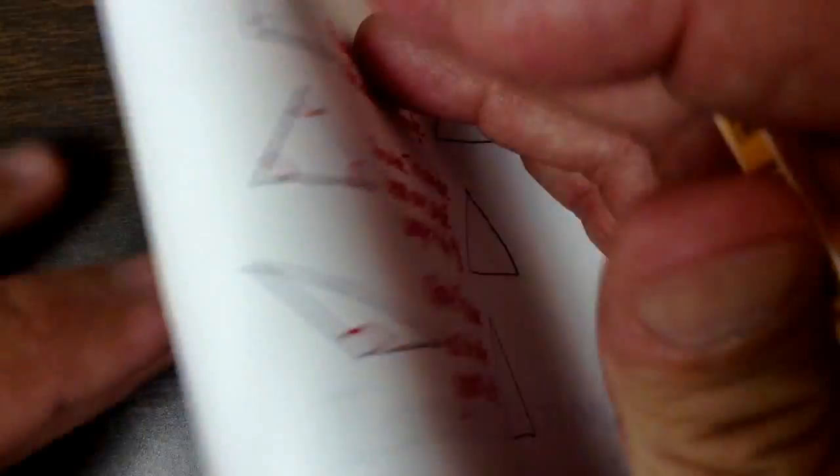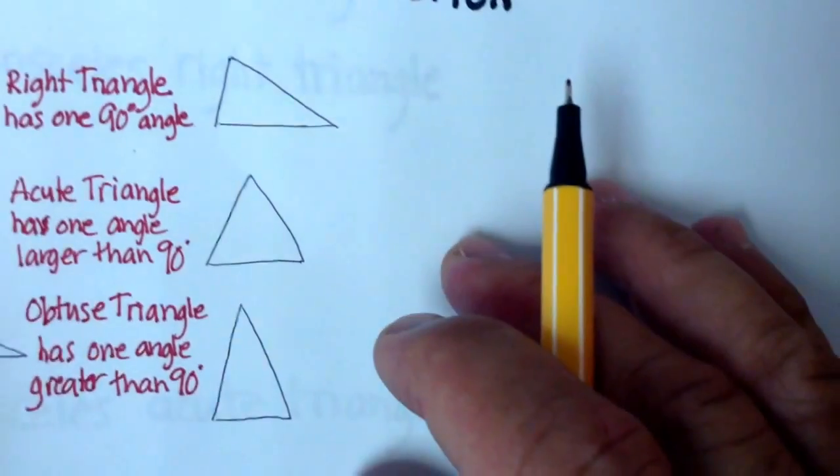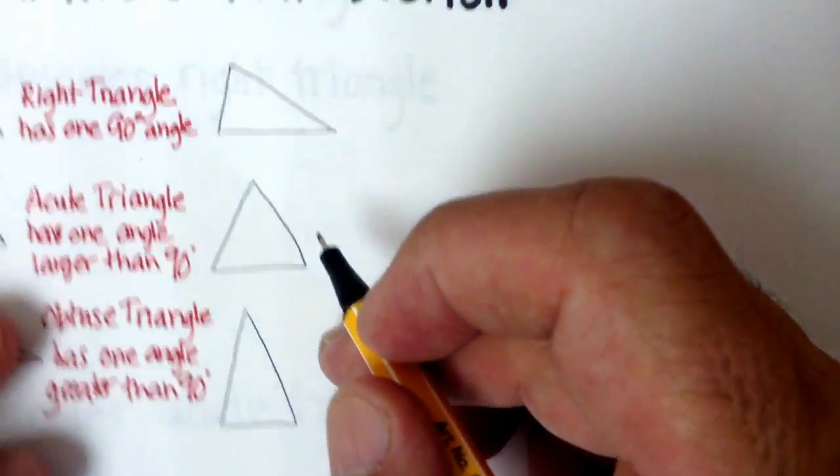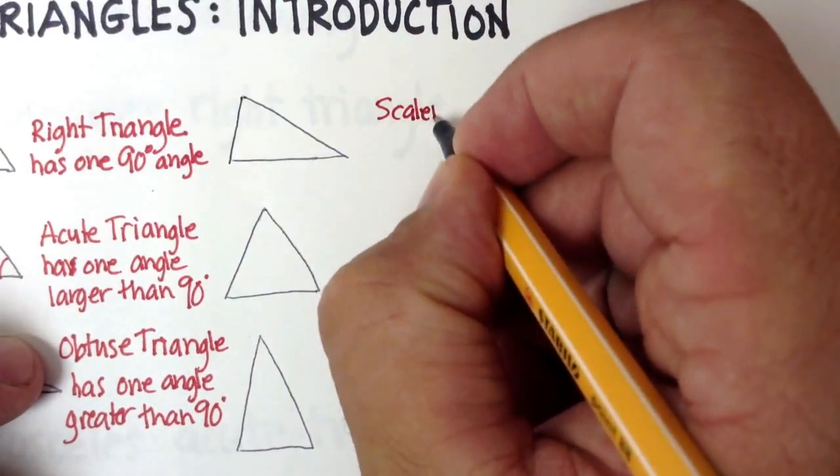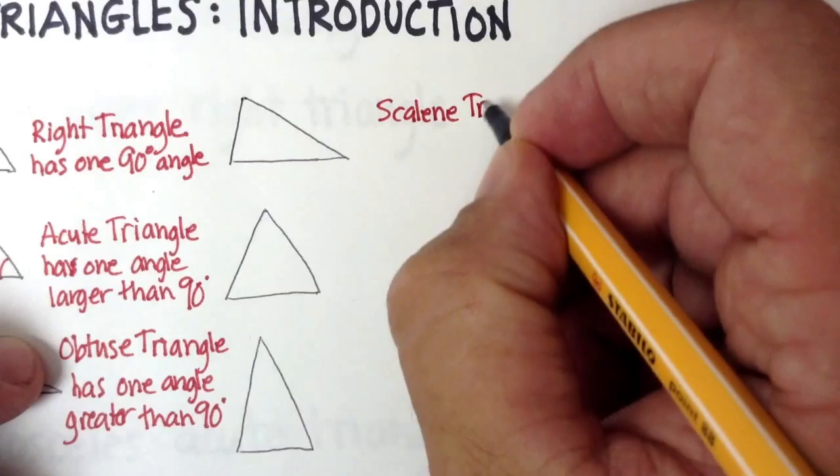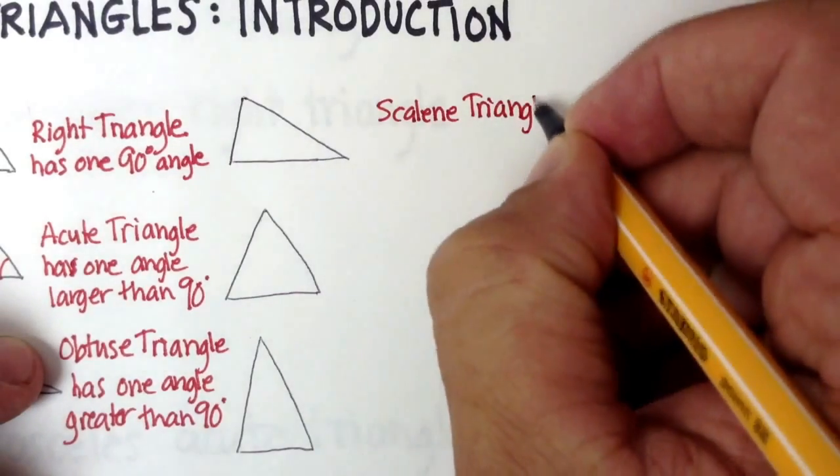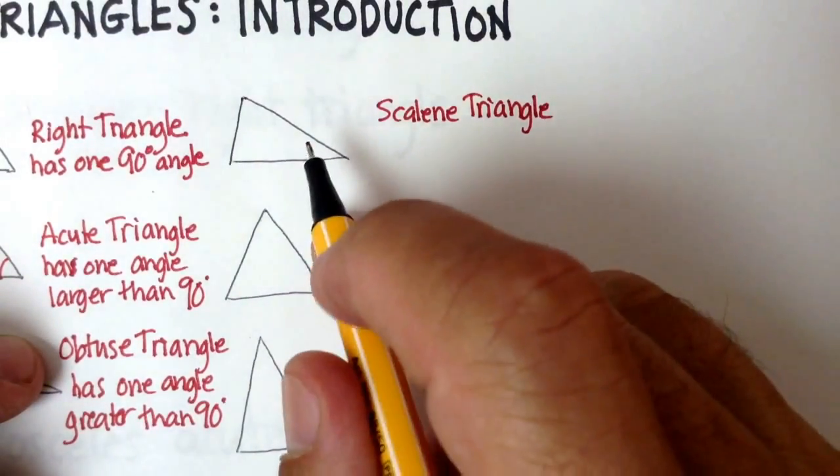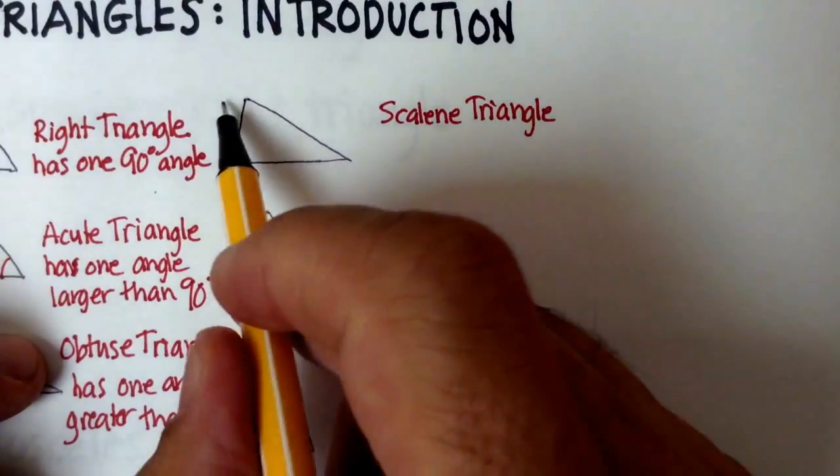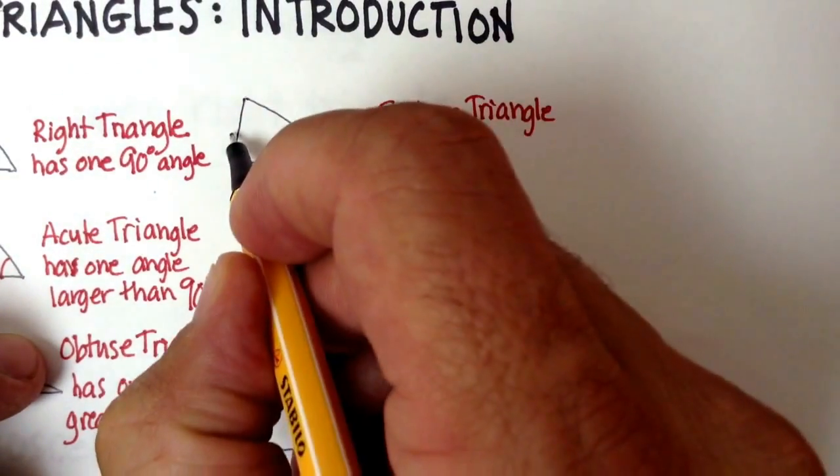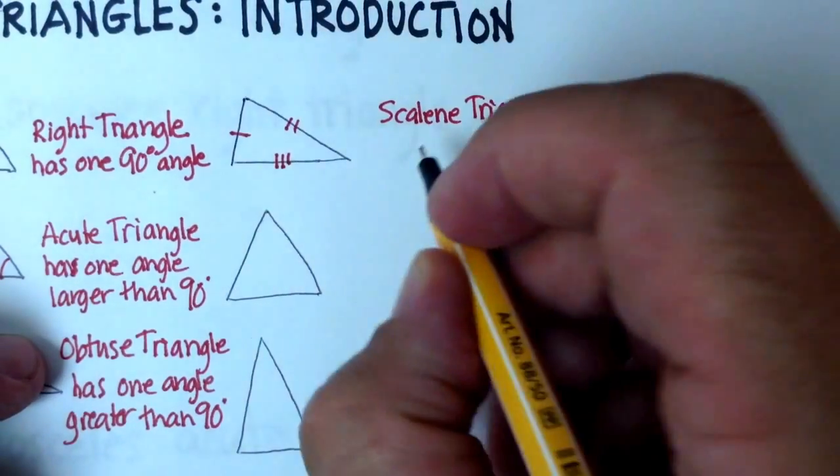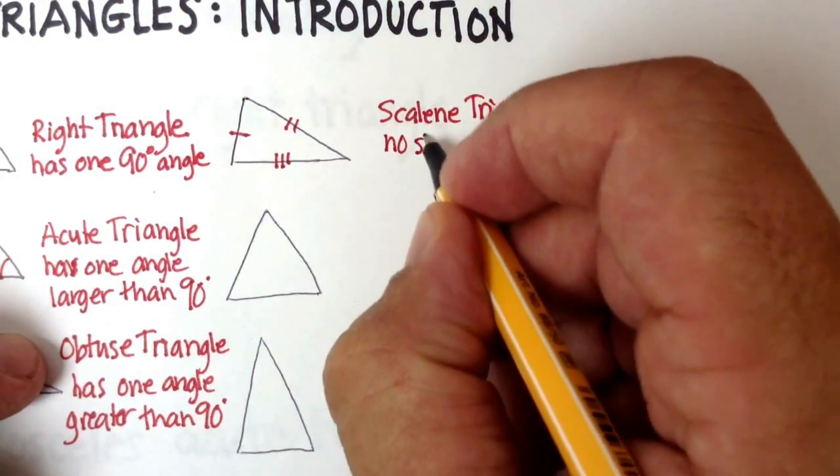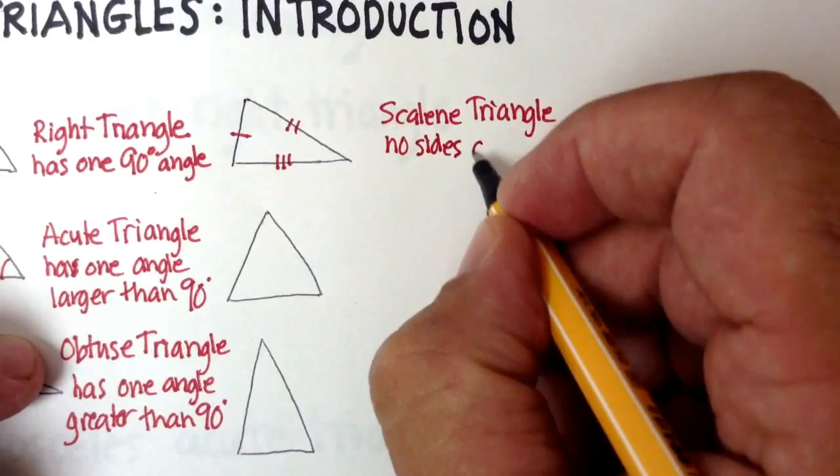So let's move over now to these next few. This is like other kinds of characteristics. This triangle is called a scalene triangle. Now, what does scalene mean? Scalene basically means that none of the sides are congruent. So this, this, and this are all different. So no sides are congruent.